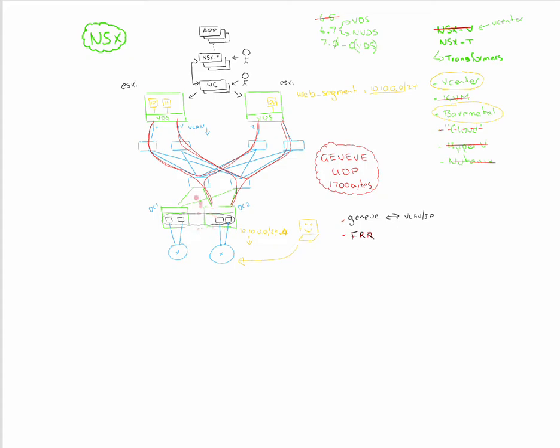From a purely routed environment, when looking at north-south gateway security, there is flow synchronization taking place, but it's really only between two members of a cluster. You have to be careful around asymmetric traffic flows from a security perspective when you've got an edge node cluster with more than two members.